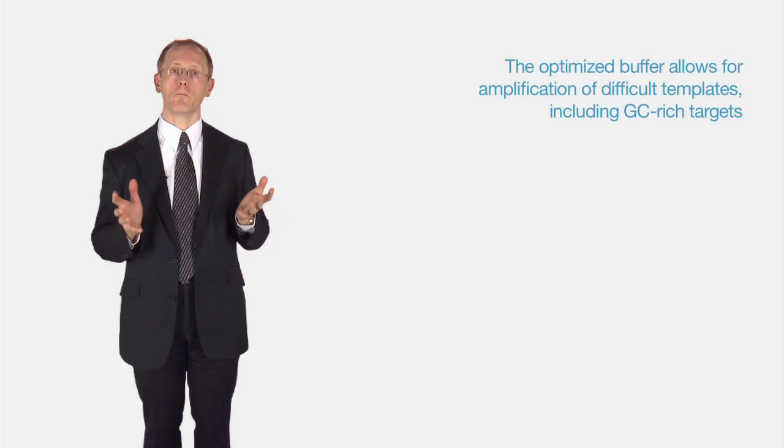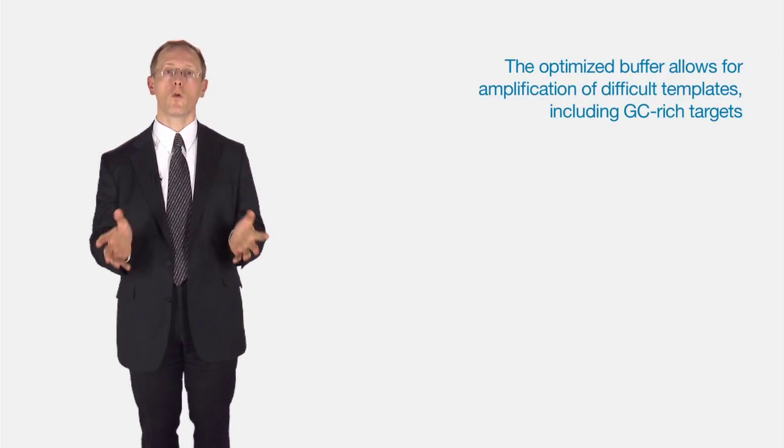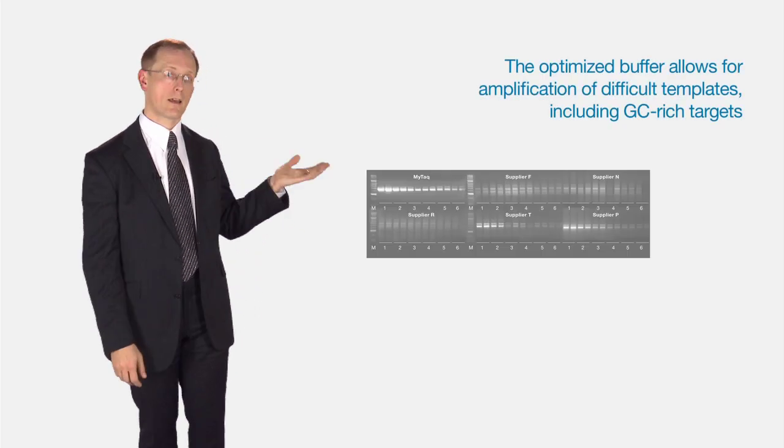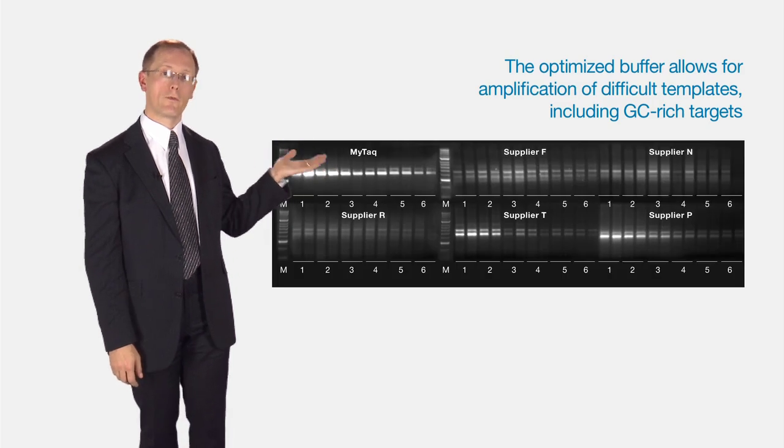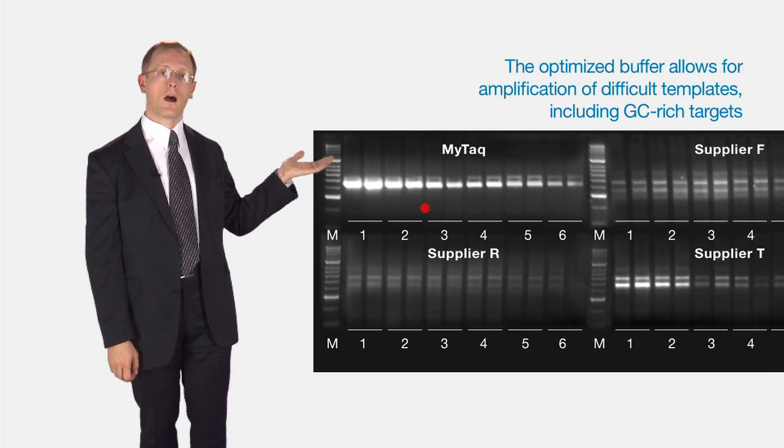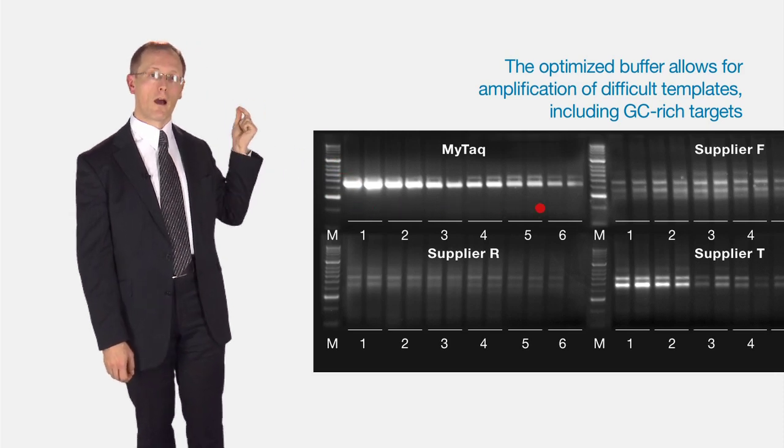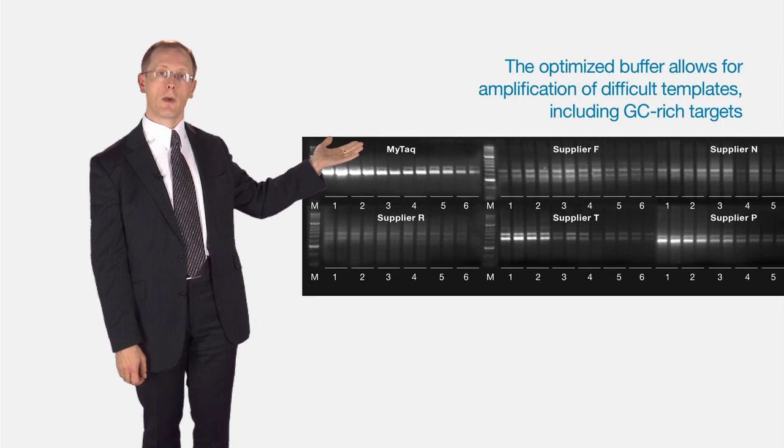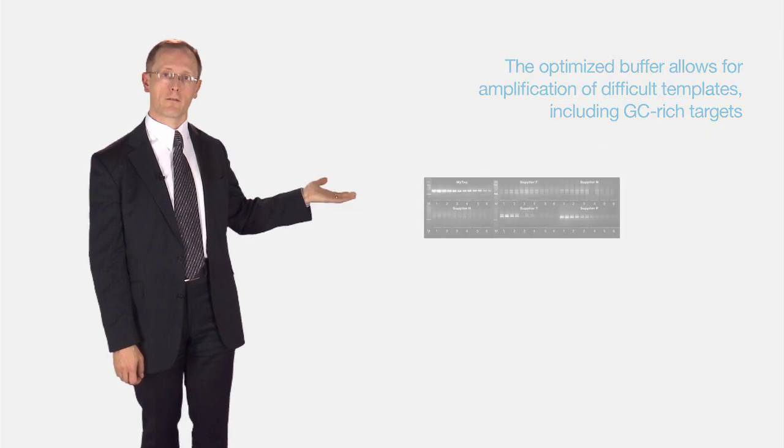An optimized buffer means you can work with more complex material. An example here is working with very GC-rich material, and you can see you're getting very good yields, either with very high amounts of template or very low amounts. Perfect results.